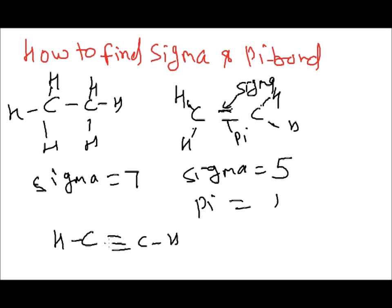If compound like C triple bond C, H, H. Then 1, 1, 2, 3 sigma bond is equal to 3, and pi bond is equal to 2. So this remaining 2 is called pi.